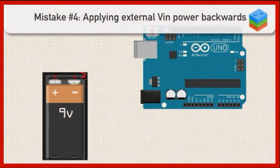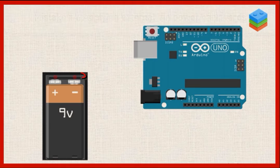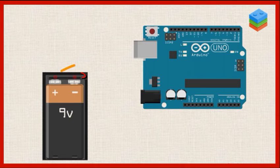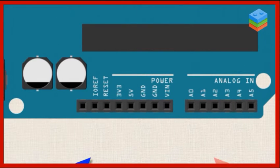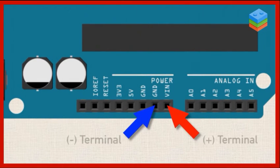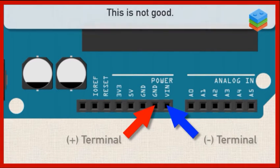At some point in your adventures with Arduino you're going to want to power your Arduino away from a computer without the USB cable. One common method is to use a 9-volt battery. You could either plug the 9-volt battery into the power jack or you can plug the terminals directly into the Arduino headers in the VIN and the ground. The positive terminal goes to VIN and the negative terminal goes to ground.